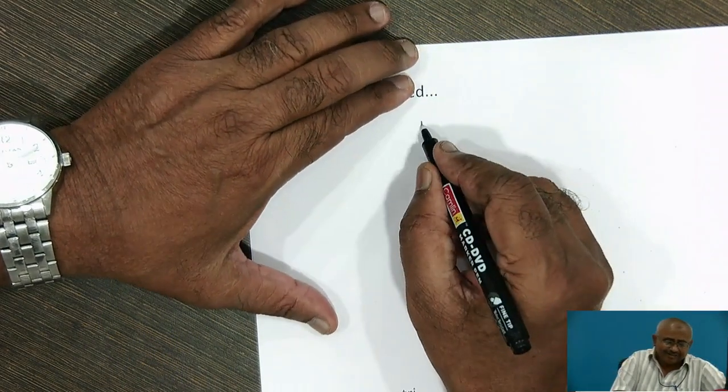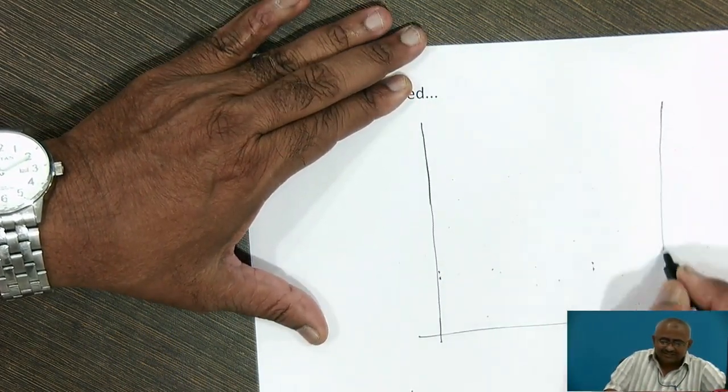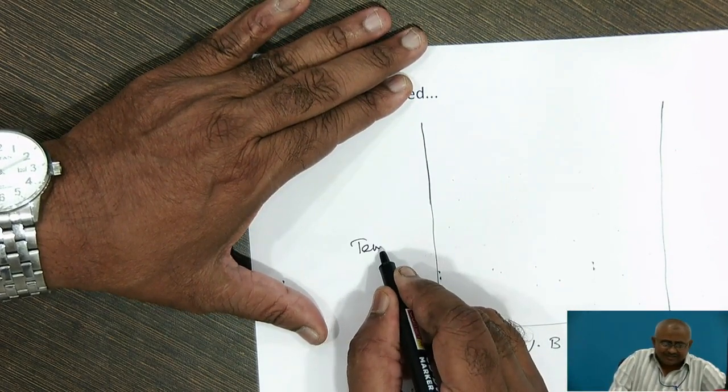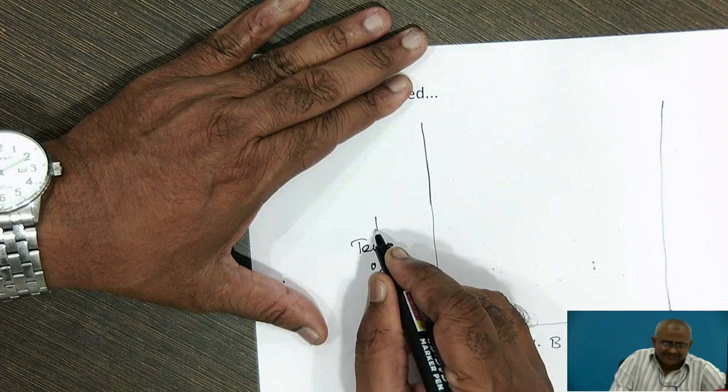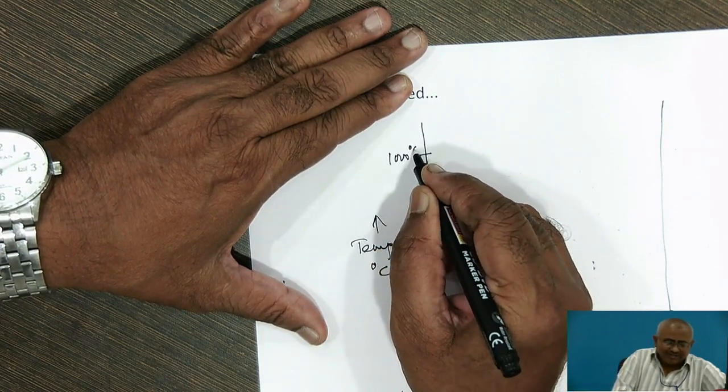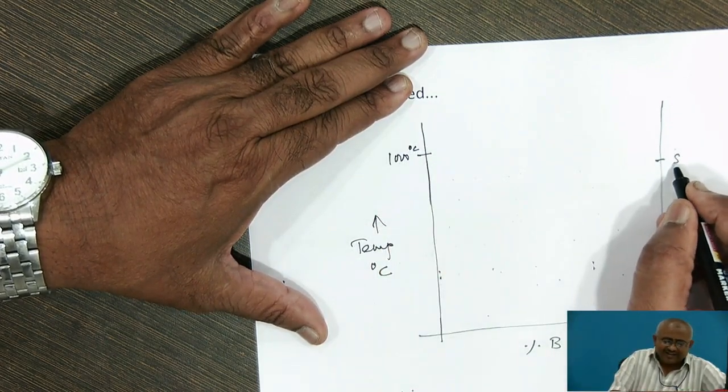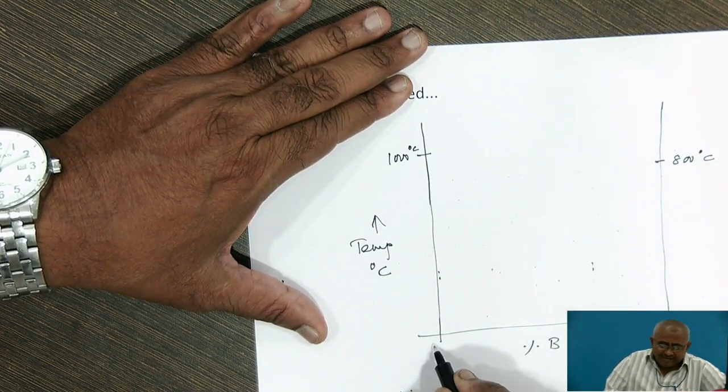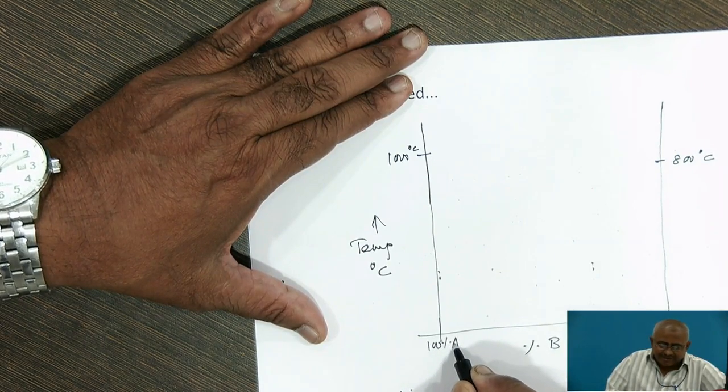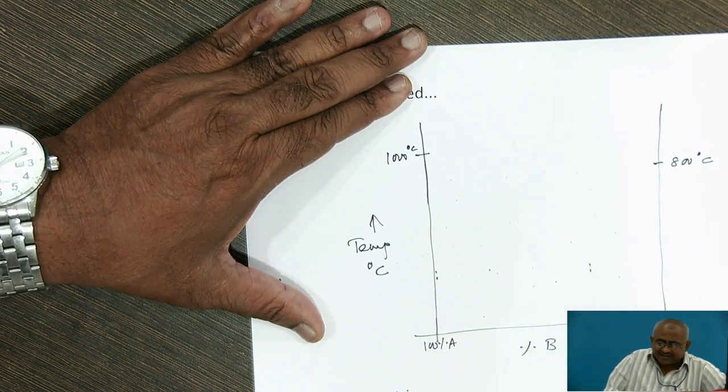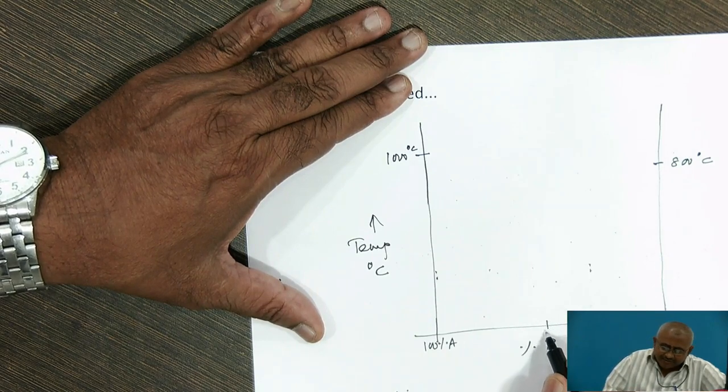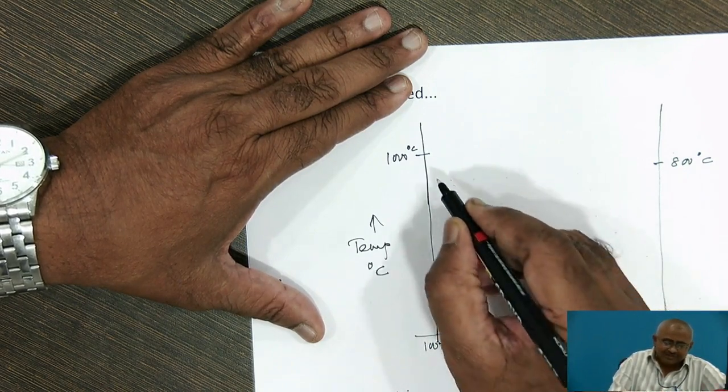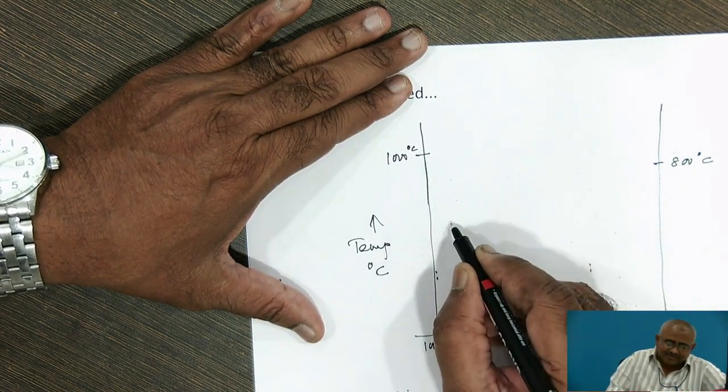This diagram will be like this. Percentage B will be on X axis, temperature will be on Y axis. Let us mark 1000 degree melting point of A and 800 degrees melting point of B at extreme ends. At one end there will be 100% A, at another end there will be 100% B. I will mark 46% B.